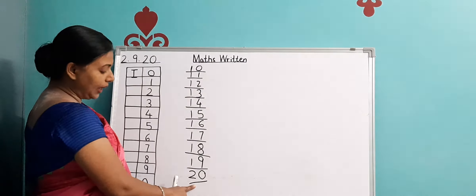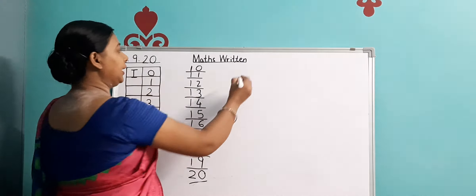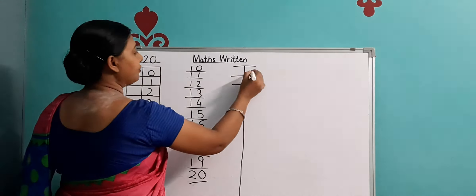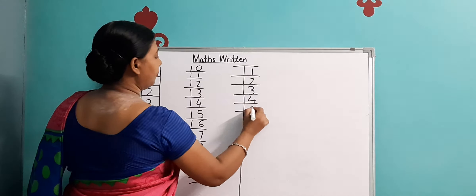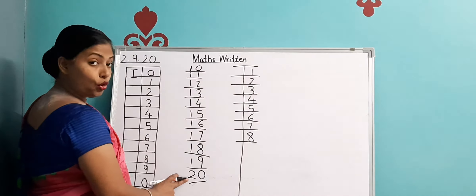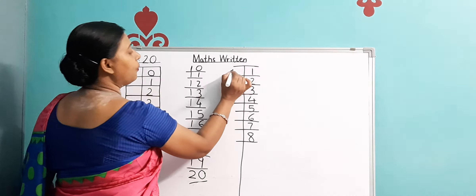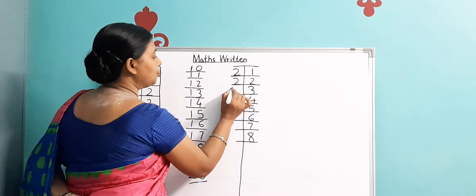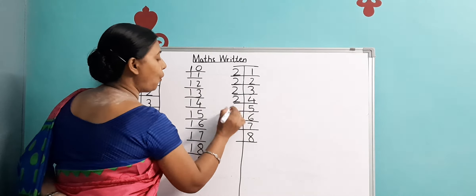Again after 0 we start with 1. So again we start with 1, 2, 3, 4, 5, 6, 7, 8 and this 2 of 20 will come over here. Now it has become 21, 22, 23 — so 20's 2 will come over here. It has become 24, 25 because here it was 20. So this 20 will come over here — 26, 27, 28.